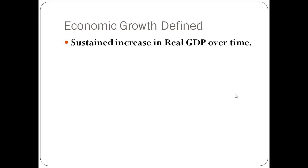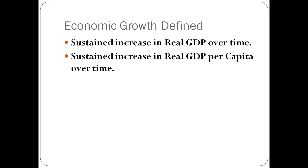Because of that, I actually like this second definition a little bit more, which is a sustained increase in real GDP per capita over time. Per capita means per person. So this is taking real GDP divided by the number of people in a nation. I think this does a better job of showing an increase in living standards, because higher real GDP per capita shows that each person has more.